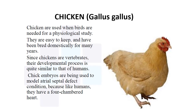Chicken is a domestic bird with the same basic physiology. They are easy to keep and have been bred domestically for many years. Since chickens are vertebrates, their development process is quite similar to that of humans. Chicken embryos are used to model atrial septal defects because, like humans, they have a four-chambered heart, making the chicken a very good model for septal defects.